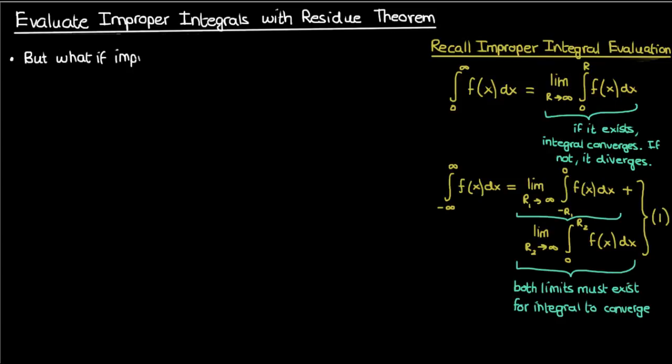But what if my improper integral diverged? Does that mean I should start crying, drop out of school, and ask my student loans to be forgiven? Of course not, because student loans can't be forgiven. But staying on topic, even if the improper integral diverges, we can still assign a value to it in some cases, using something called the Cauchy principal value.